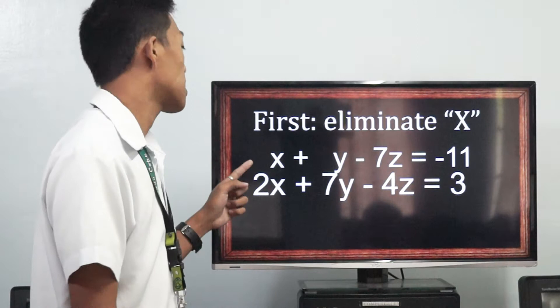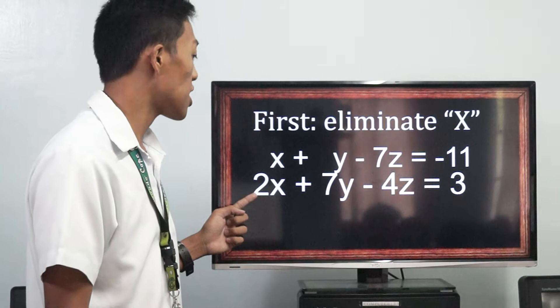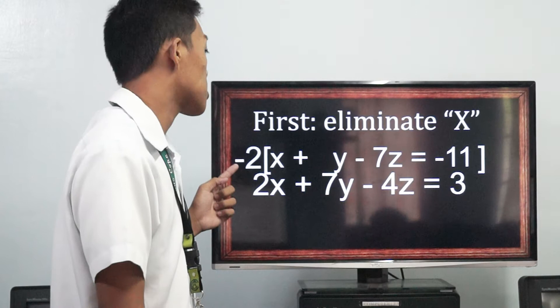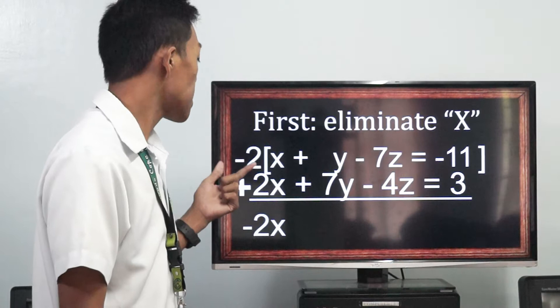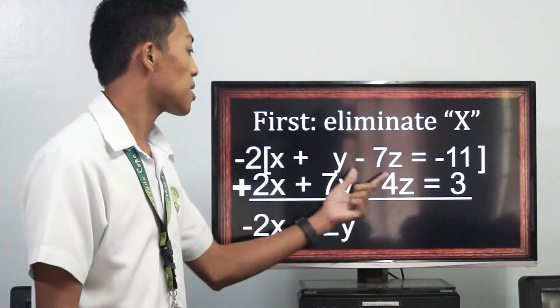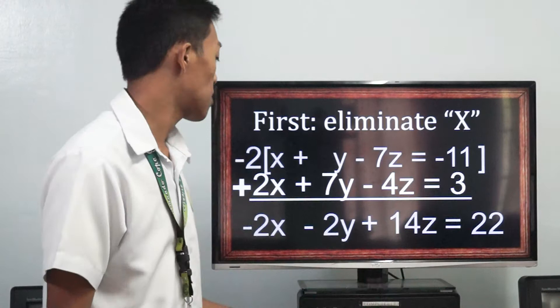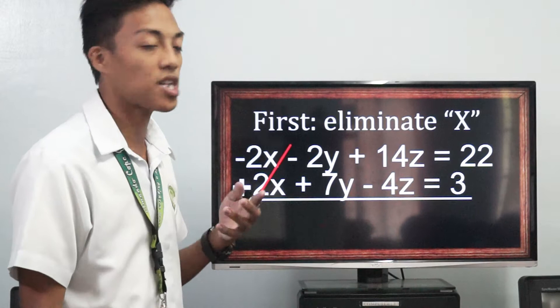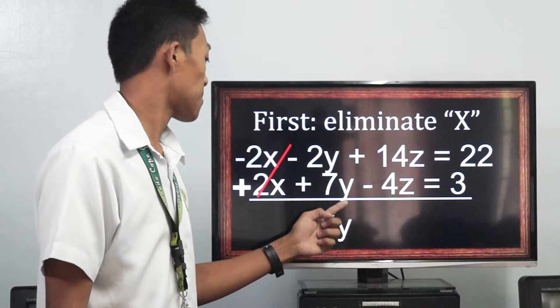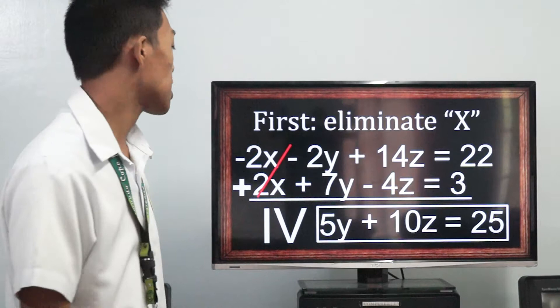First, let's eliminate x from the first and second equations. Our first equation: x plus y minus 7z equals negative 11. Our second equation: 2x plus 7y minus 4z equals 3. Let's multiply the first equation by negative 2 and distribute: negative 2 times x equals negative 2x, negative 2 times y equals negative 2y, negative 2 times negative 7z equals 14z, and negative 2 times negative 11 equals 22. This is our new equation. Let's eliminate negative 2x and positive 2x and proceed to addition: negative 2y plus 7y equals 5y, 14z plus negative 4z equals 10z, and 22 plus 3 equals 25. This is our fourth equation: 5y plus 10z equals 25.